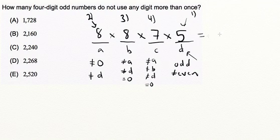And if you multiply these all together, you're going to get 64 times 35, which is 2240.